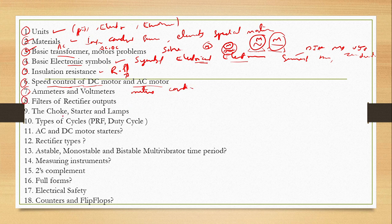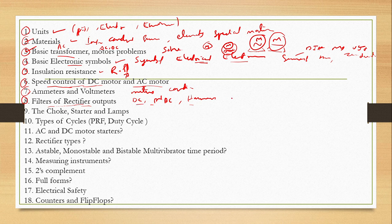Filters — filters of rectifier outputs. In the rectifier outputs we use DC pulse setting. That is the benefit of the rectifier. Filters — we will use it. That's why we will use it.